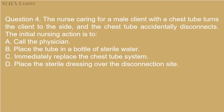Question 4: A nurse caring for a male client with a chest tube turns the client to the side and the chest tube accidentally disconnects. The initial nursing action is to: A) Call the physician, B) Place the tube in a bottle of sterile water, C) Immediately replace the chest tube system, D) Place a sterile dressing over the disconnection site.